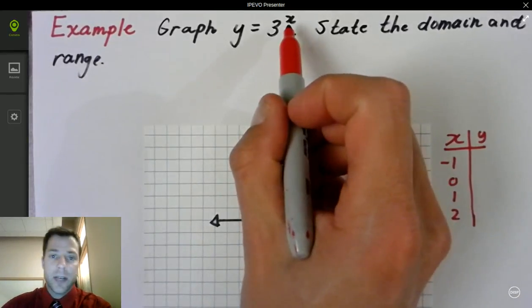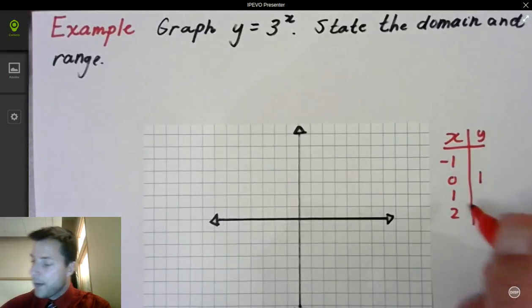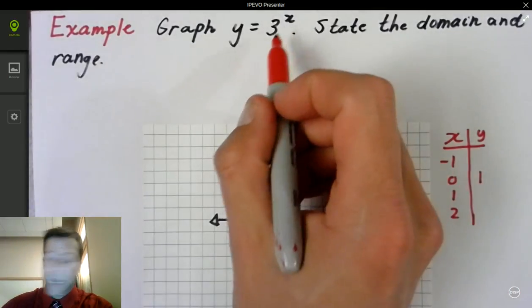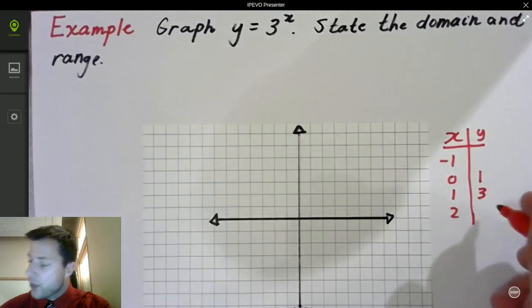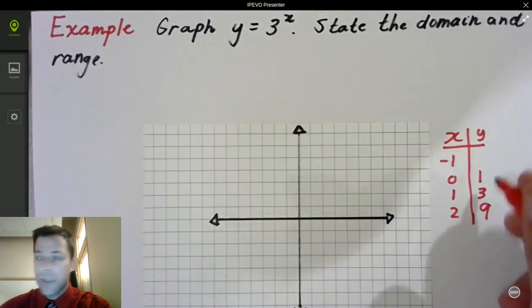Well, if I plug in 0, 3 to the 0, anything to the 0 power is 1. Plug in 1 for x, 3 to the 1st is 3. You plug in 2, you get 3 squared is 9. So I would have enough to do that.